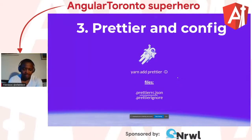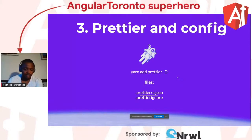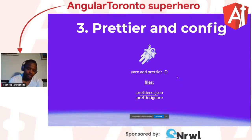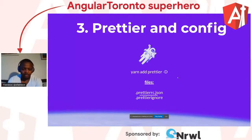For Prettier, the basic steps of adding it are: adding it as a dependency, and then adding the configuration either through package.json or via other methods. In my case, I prefer having the `.prettierrc` and `.prettierignore` files.